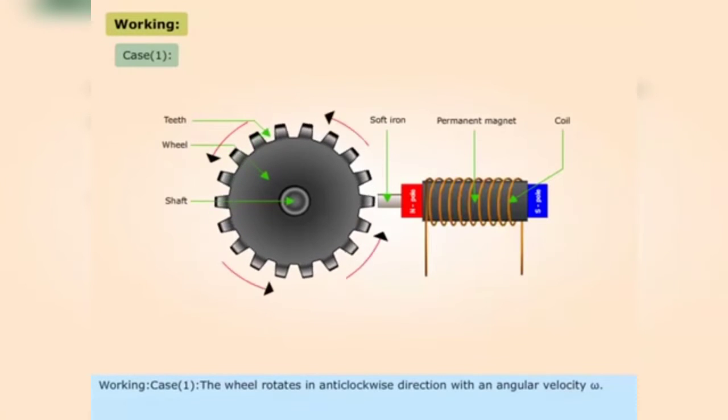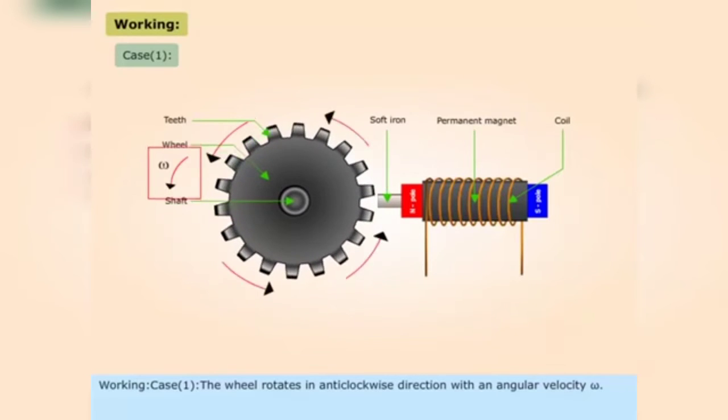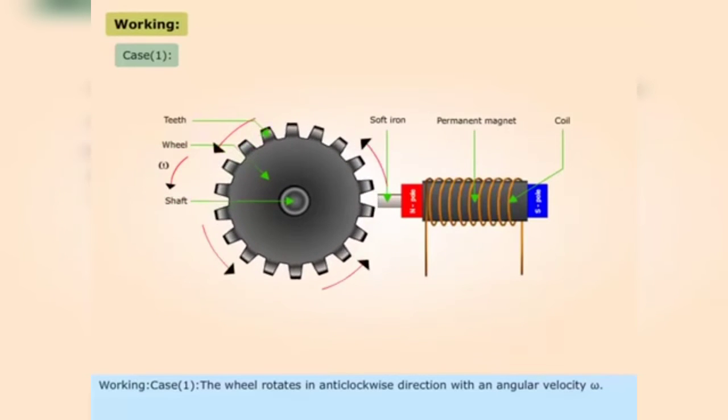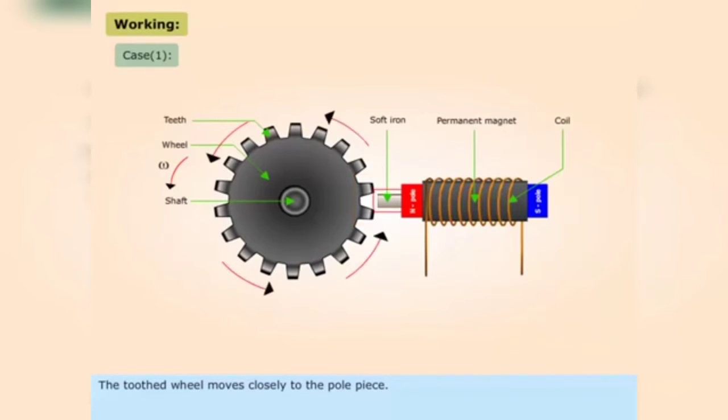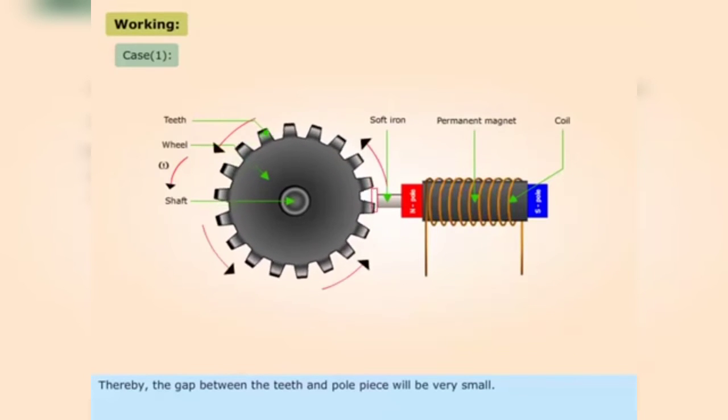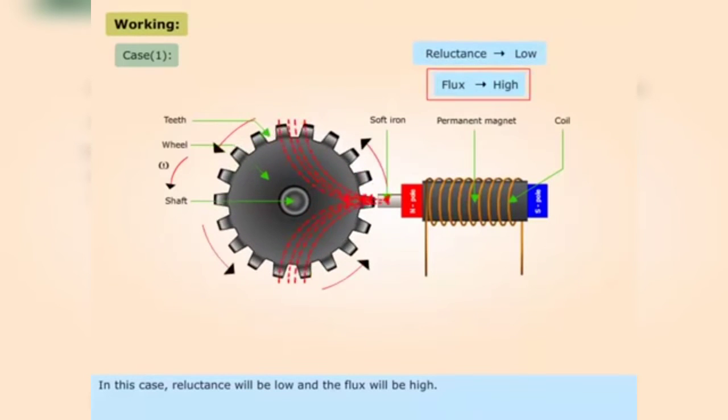Working Case 1: The wheel rotates in anti-clockwise direction with an angular velocity omega. The toothed wheel moves closely to the pole piece. Thereby, the gap between the teeth and pole piece will be very small. In this case, reluctance will be low and the flux will be high.